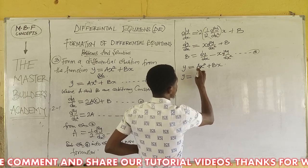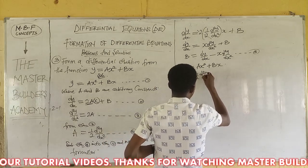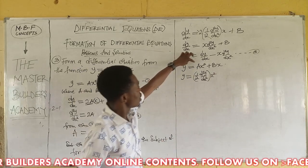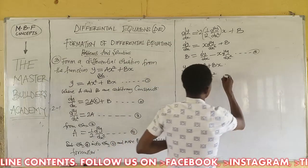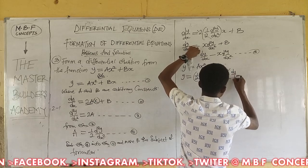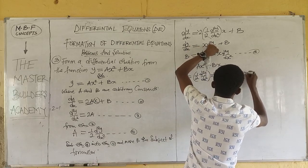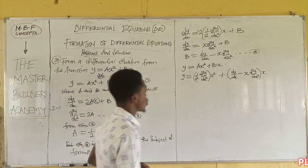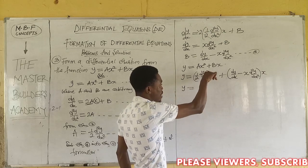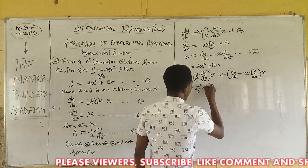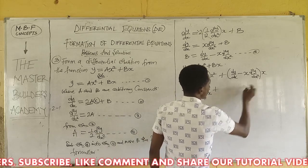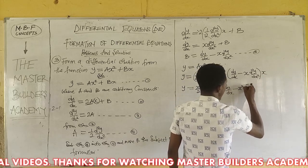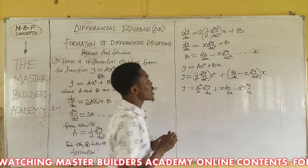So we write: y equals (1/2)(d²y/dx²) multiplied by x², plus the value of b, which is (dy/dx minus x·(d²y/dx²)), all multiplied by x. Now we expand the brackets: y equals (x²/2)(d²y/dx²) plus x·dy/dx minus x²·(d²y/dx²).